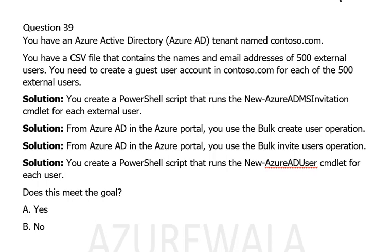For this question there are several different solutions available over the internet and I have compiled them all together so we can see which are the correct answers. Solution one: you create a PowerShell script that runs the New-AzureADMSInvitation cmdlet for each external user. This command is basically for inviting external users to Active Directory, and the parameters being passed — like name and email addresses of the 500 external users — are sufficient to complete the job. So this solution meets our requirement.